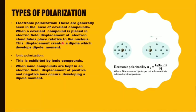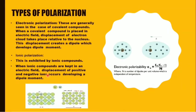Ionic polarization is exhibited by ionic compounds. When ionic compounds are kept in an electric field, there is a displacement of positive and negative ions, which develops a dipole moment. The ionic polarizability αᵢ equals ε₀(εᵣ − 1)/Nᵢ, where N is the number of dipoles per unit volume. The electronic polarizability αₑ equals ε₀(εᵣ − 1)/N, where N is the number of dipoles per unit volume, and it is independent of temperature.